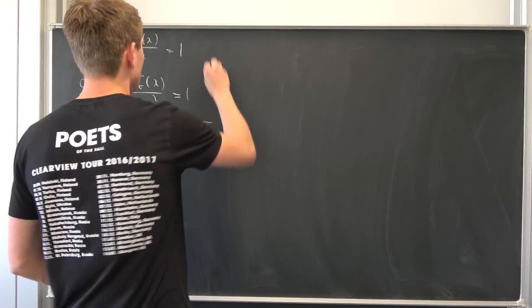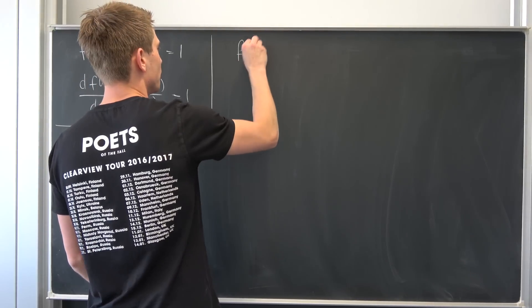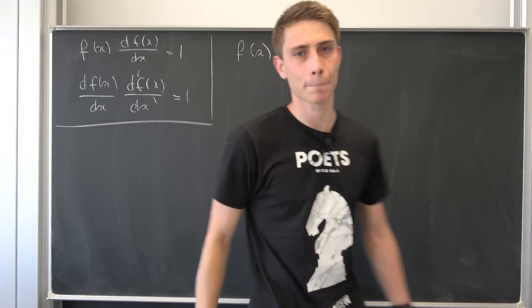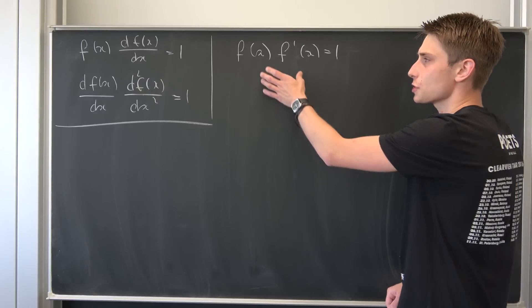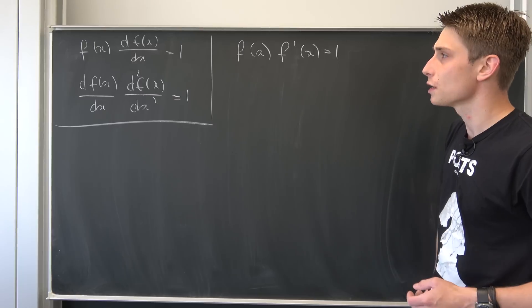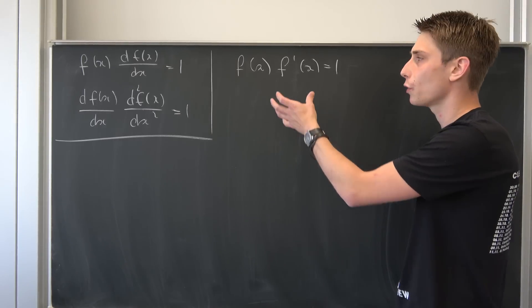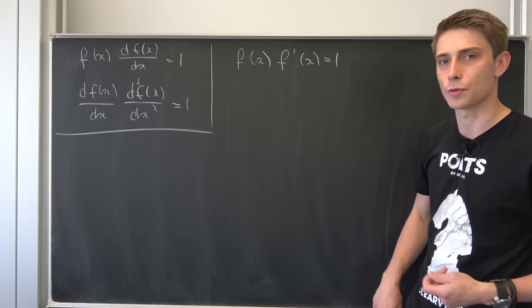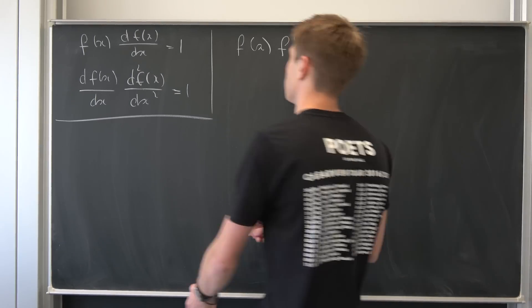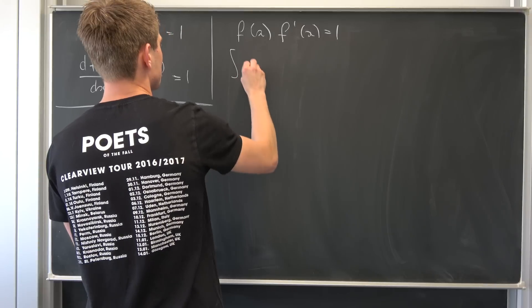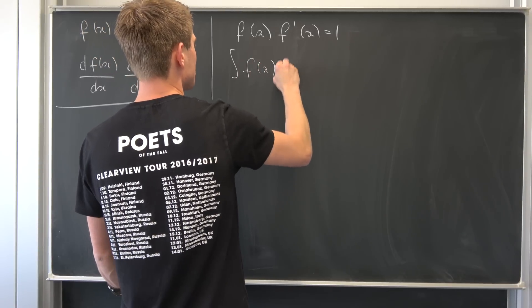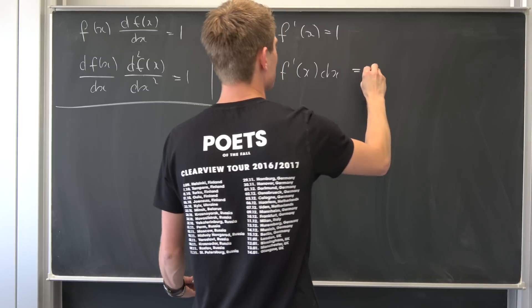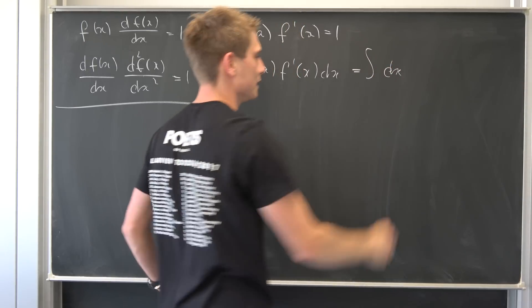We start with the first one: f(x) times f'(x) equals 1. Solving this is quite easy because it is basically already separated. All we really need to do is integrate both sides with respect to x. So integrating both sides: the integral of f(x)·f'(x) dx equals the integral of dx.